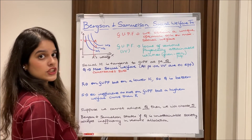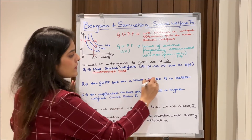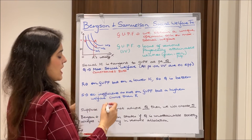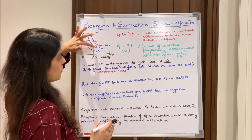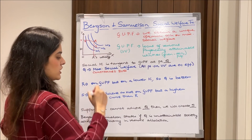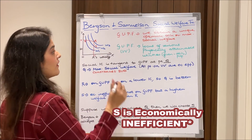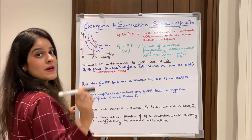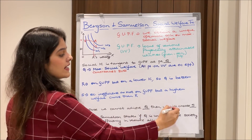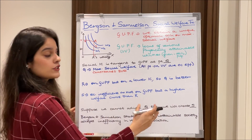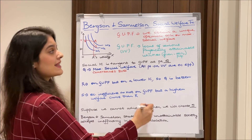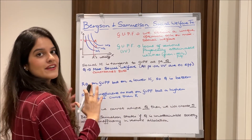Point R is on the W1 curve and lies on the VV' curve, meaning it is economically efficient, but because it is on a lower welfare curve it is less preferred. Point S is not on the VV' curve, so it is not economically efficient, but because it is on a higher welfare curve W2, it is better to choose S than R. If Q is unattainable, the society accepts inefficiency in resource allocation and chooses S — that is what Bergson and Samuelson are trying to say.